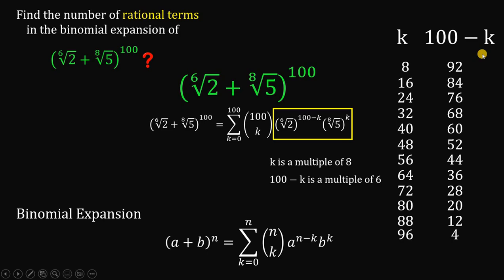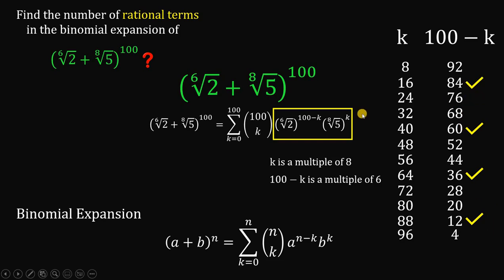Now, 100 minus k must be a multiple of 6. From our list: 4 is not a multiple of 6, but 12 is — so one case is k equals 88, giving 100 minus k equals 12. That works: 88 is a multiple of 8 and 12 is a multiple of 6. Continuing: 20 is not a multiple of 6, 28 is not, but 36 is — that's our second. Then 44 is not, 52 is not, but 60 is — that's our third. And 68 is not, 76 is not, but 84 is — that's our fourth. Therefore, we found 4 values of k such that k is a multiple of 8 and (100 minus k) is a multiple of 6. The number of rational terms is 4.